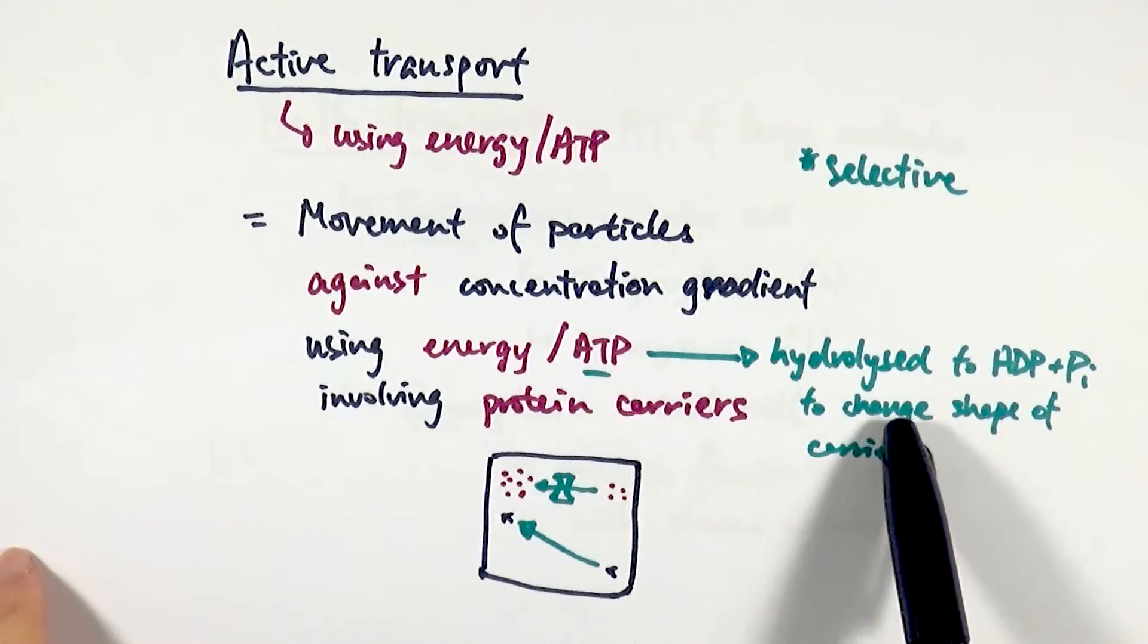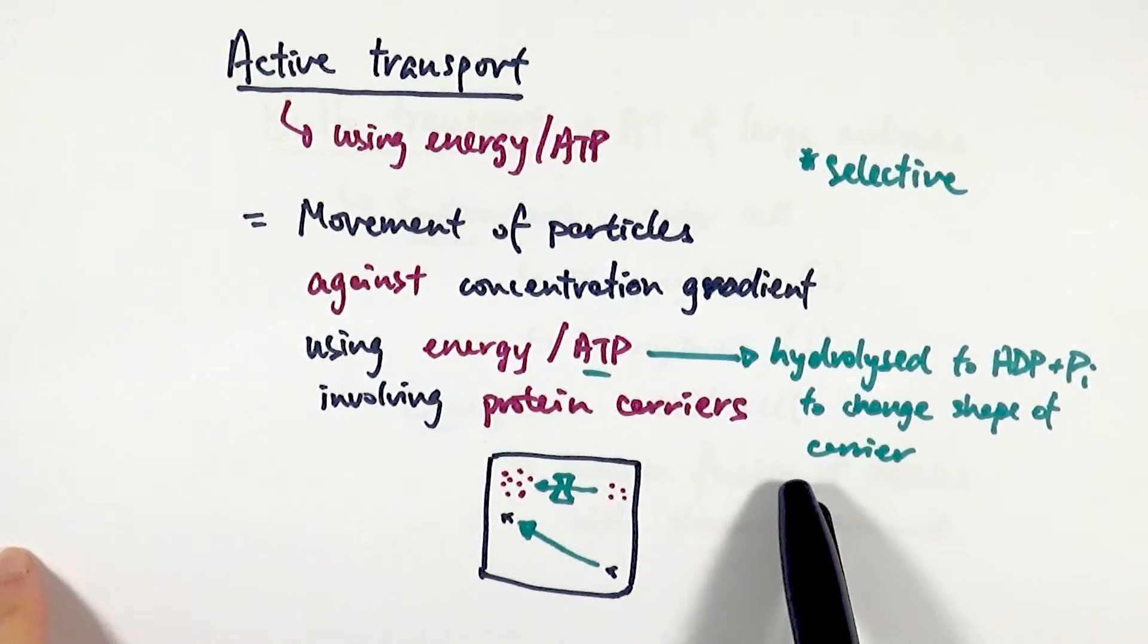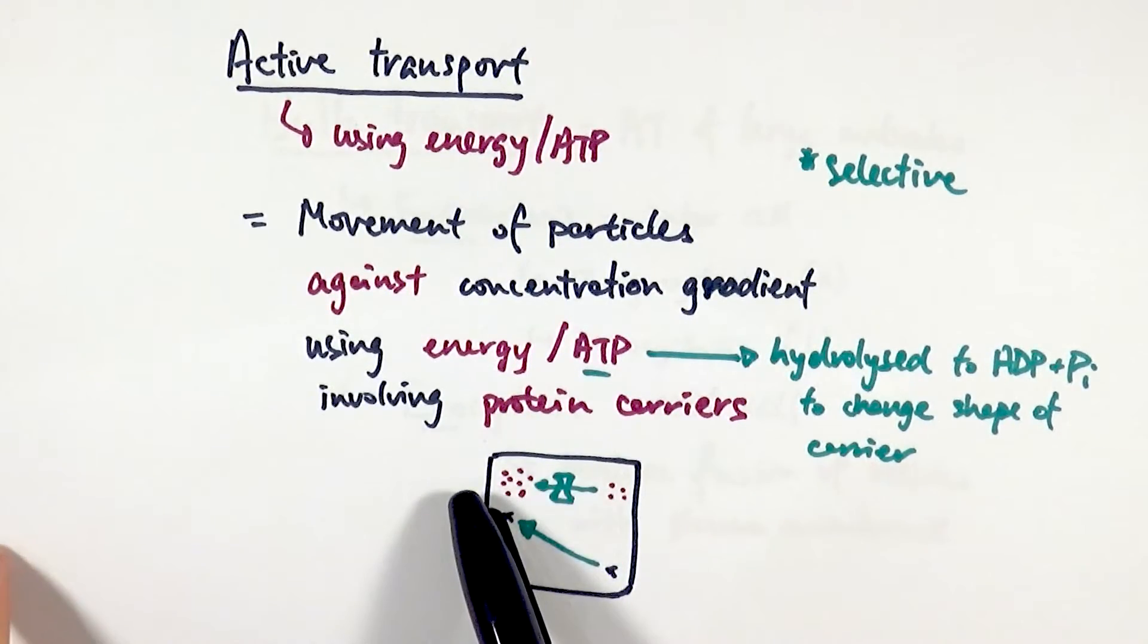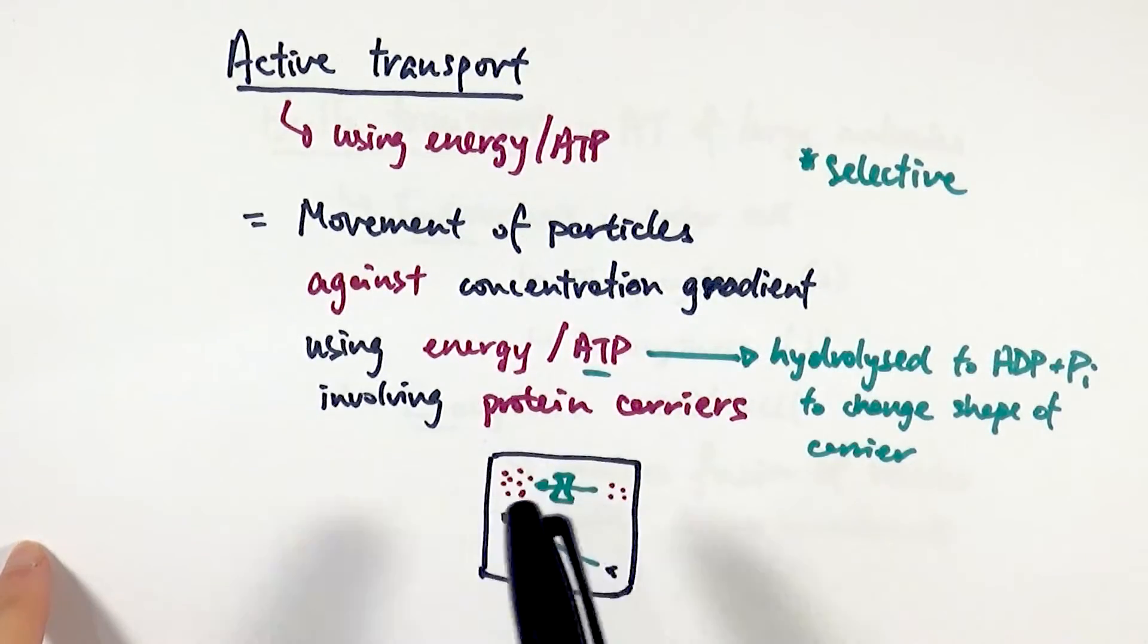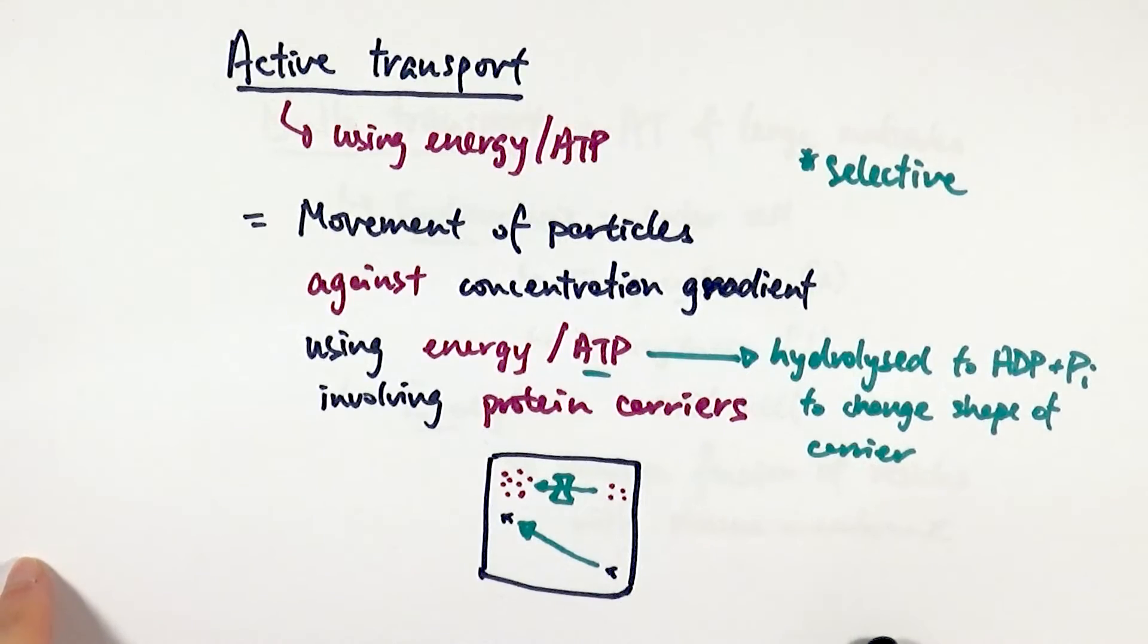It requires the energy to do conformational change of shape of the carrier to pump these substances across. It has the concept that it's selective: protein pumps choose what to transport across the membrane.